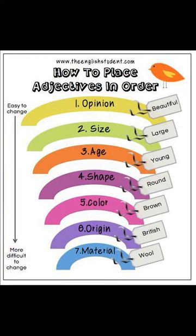The first one is correct — 'I want a big black cat.' Why? Because 'big' is size and 'black' is color, size comes first. Size is number two and color is number five on the infographic. You can use this chart for all orders of adjectives.